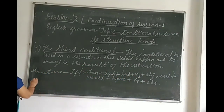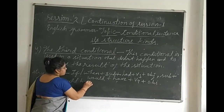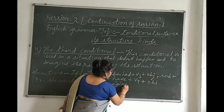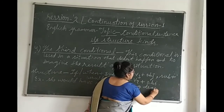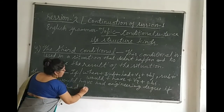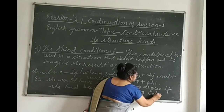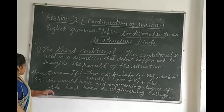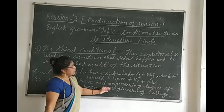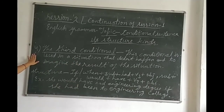Here is a simple example. If she had studied, she would have passed the exam — she would have been to engineering college. The second example: she would have had an engineering degree if she had been to engineering college. This is all about the fourth kind of conditional sentence — the third conditional.